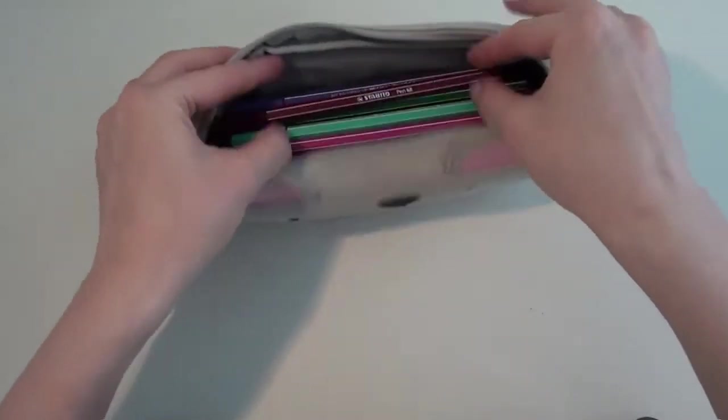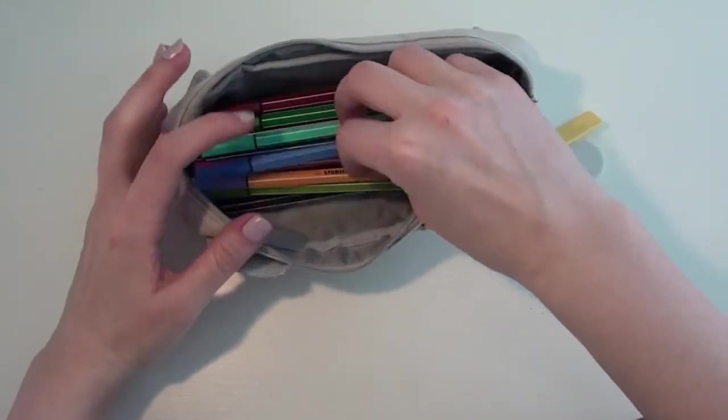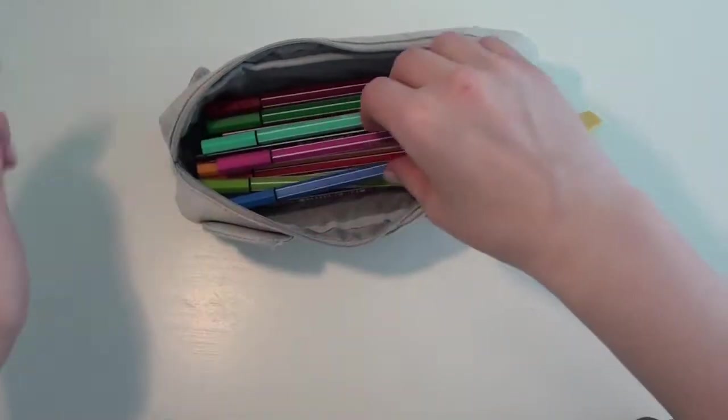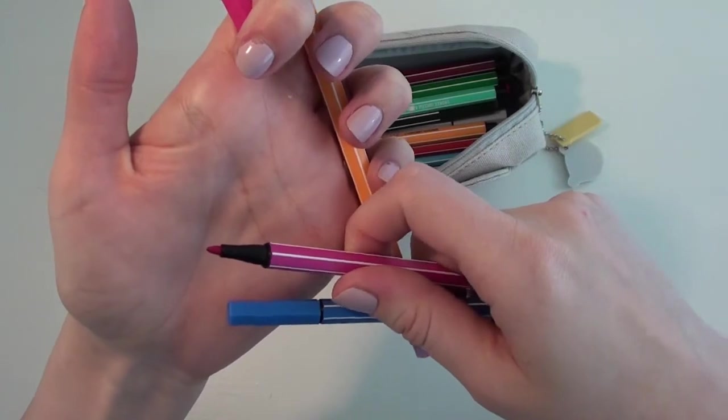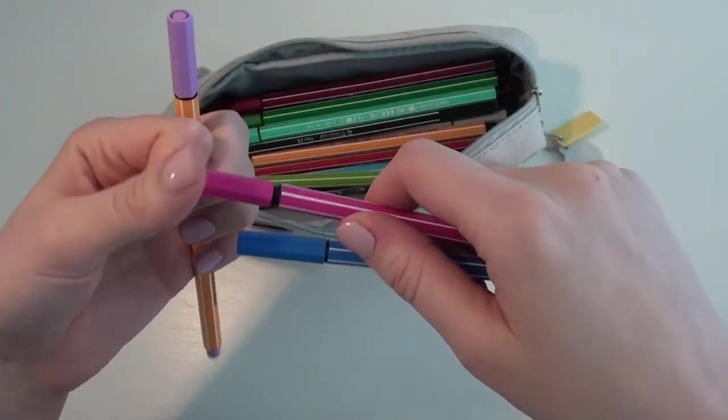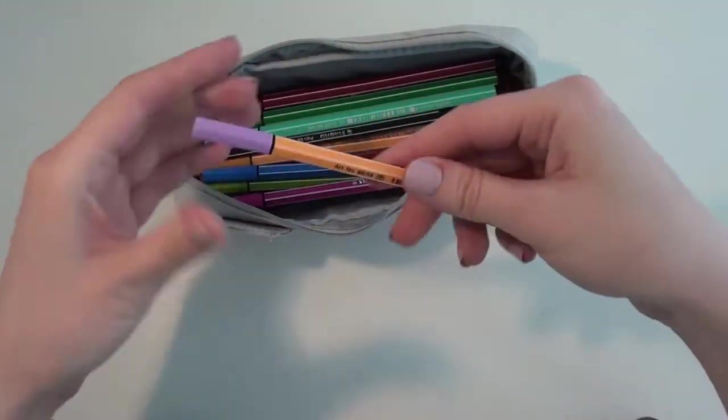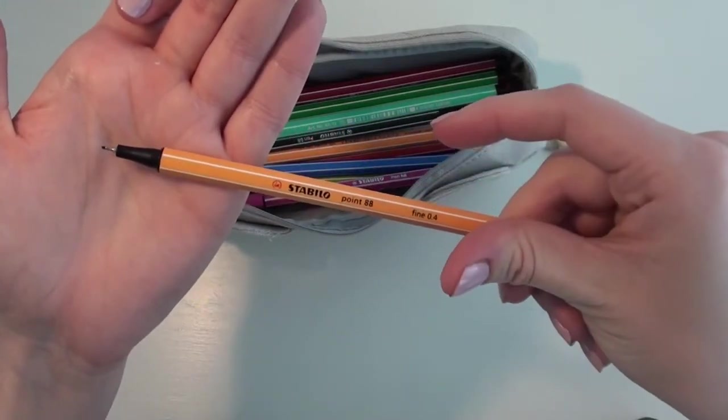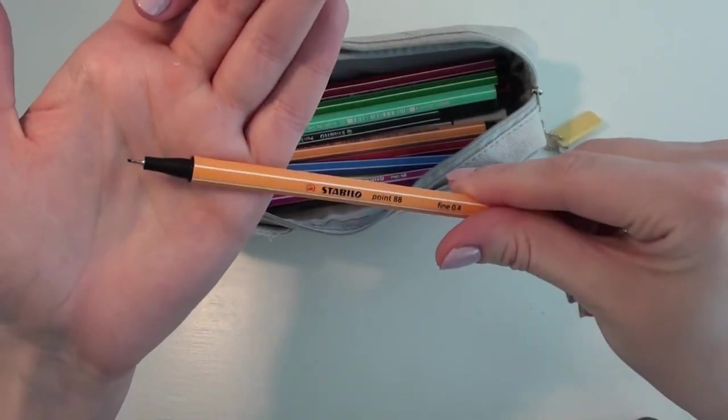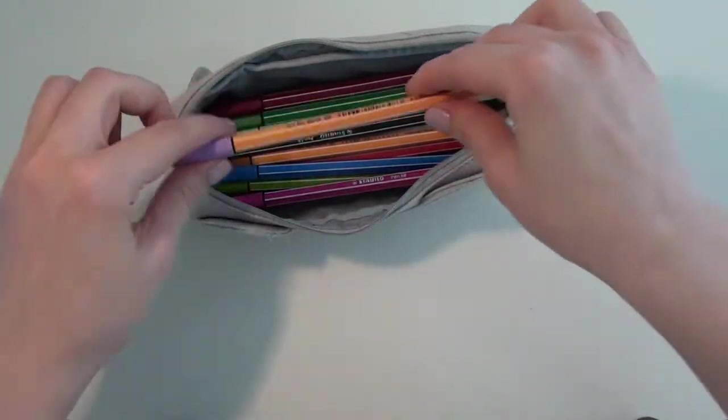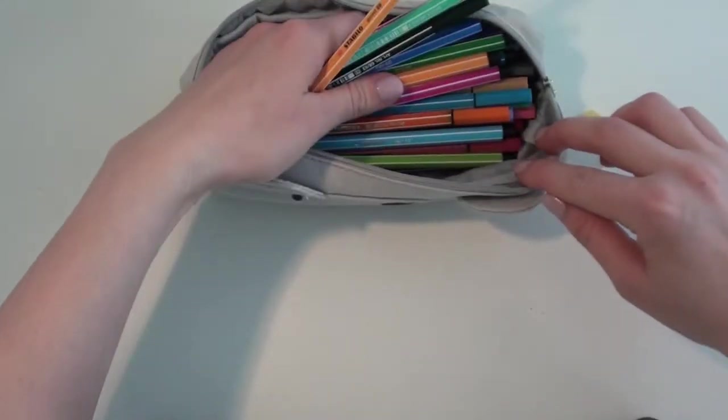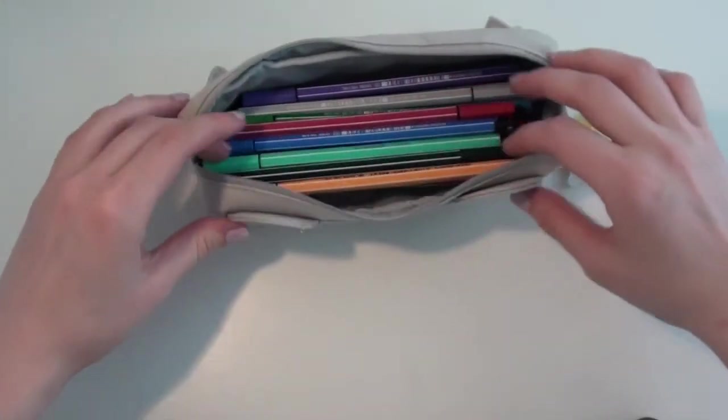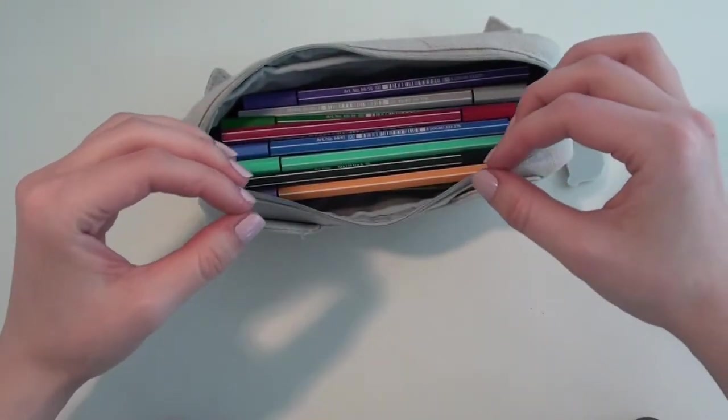That was the content of that pencil case, and then I have these which are my Stabilo 68 pens. I also do have one 88. The 68s are water-based felt tip pens, and then this one is the Fine 04, 0.4 even, 0.88 pen. They come in a variety of colors, they're amazing. There's a lot to choose from which is why I like them, and for smaller details they're really good.